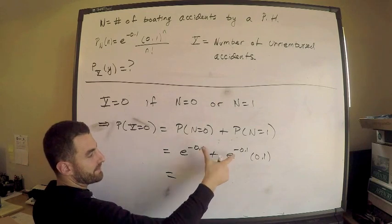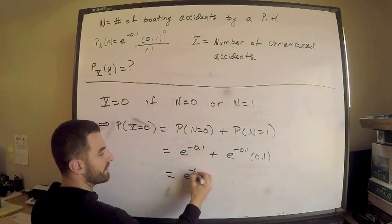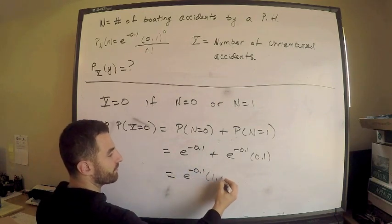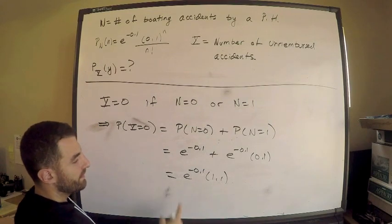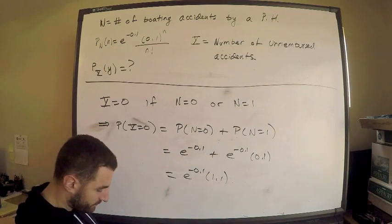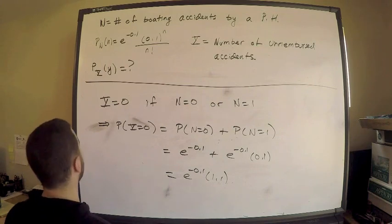Do some algebra. Just factor this out if you like. It's easy, right? e^(-0.1) times 1.1. So there is the probability that Y is zero. That takes care of that.